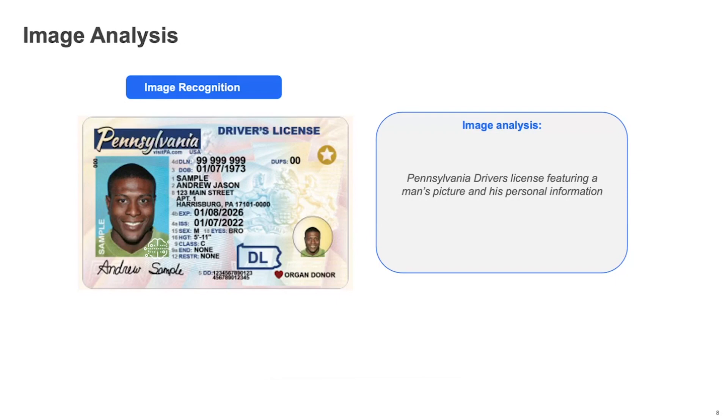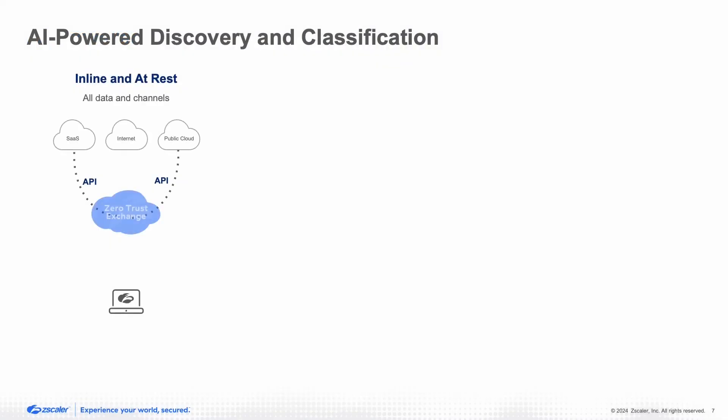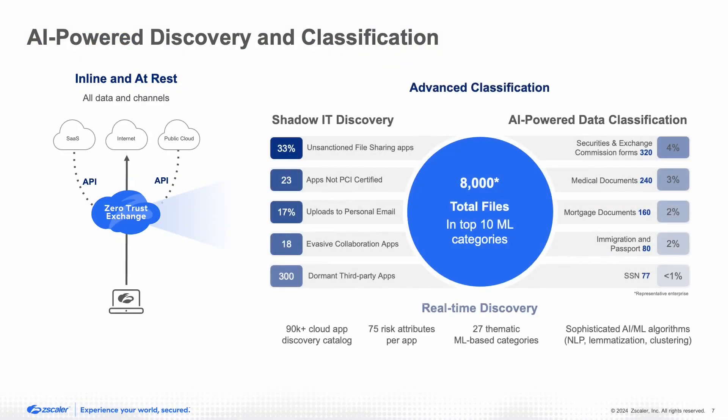Both the image analysis as well as the contextual ML-based categorization for text data is available in Zscaler across all channels, and by default this classification provides instantaneous visibility across sensitive data. The AI classification is automatically present in all our inline channels — meaning automatically, as data is uploaded, without defining any policy and with zero regex, we can automatically provide you visibility into what kind of data is getting uploaded to various SaaS and public cloud applications.